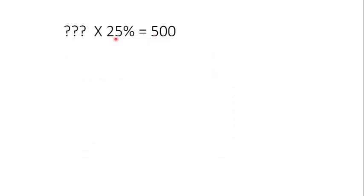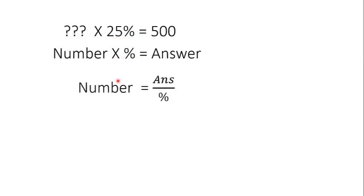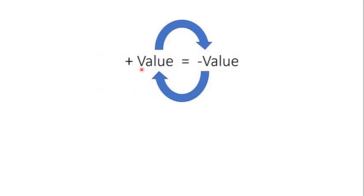But if we are required to find that number, of which the percentage is given, how will we do that? Suppose 500 is 25% of a number. How will we come to know that number, of which 25% is 500? To solve this, we move the percentage to another side of the equation.